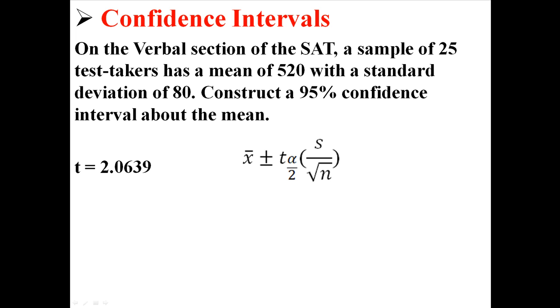Now here is the equation. We're just going to plug things in. It's plus or minus, so we're going to do one with minus and one with plus. We have a standard deviation of 80. We know that our sample size is 25. We know that the sample mean is 520. And we know that the t that we just found using the degrees of freedom and the area in the tails is 2.0639.